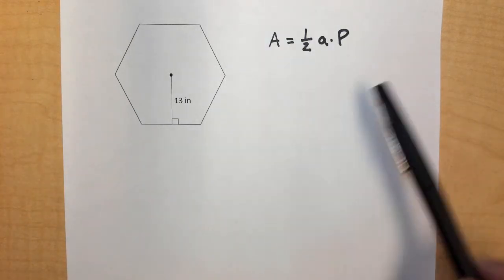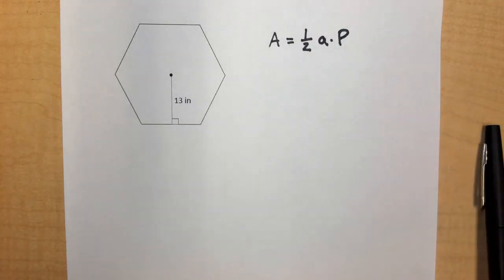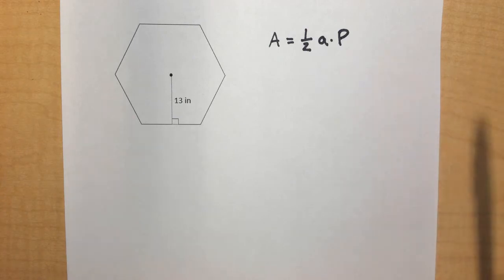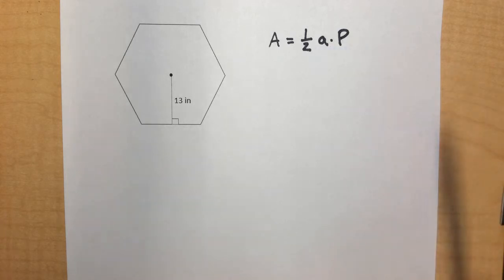And if we look at our formula, and if you want to know how we derive that formula, you can watch a video that I did previously. But the formula for the area of any polygon is going to be one-half the apothem, which is this A, times the perimeter. So one-half times the apothem times the perimeter.